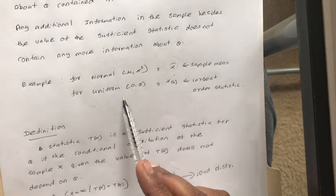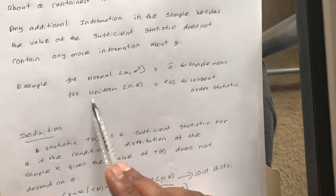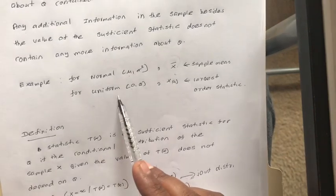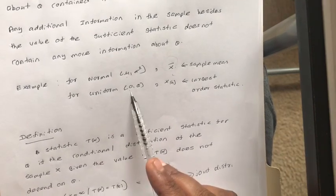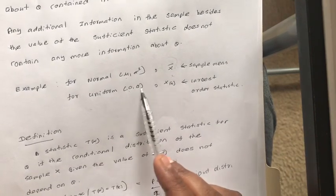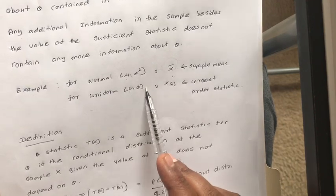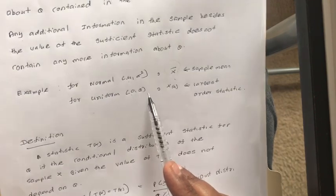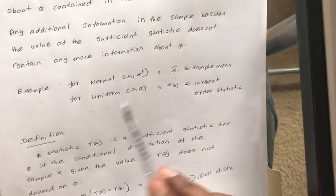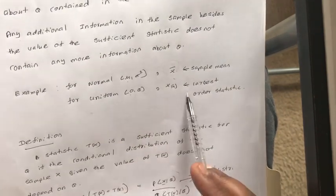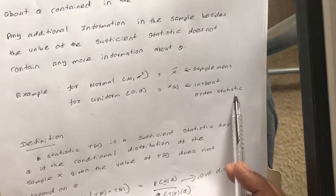Consider another example. Now the data is uniformly distributed within the range from 0 to theta. In that case, your sufficient statistic is X_n, the maximum value, or the largest order statistic.